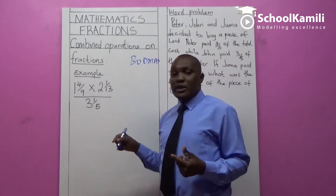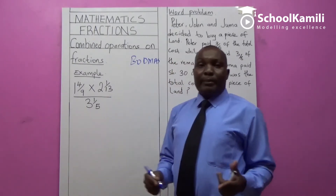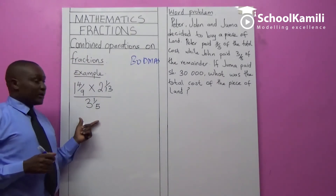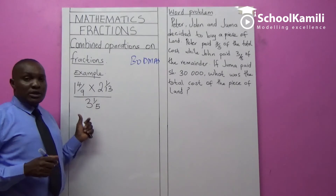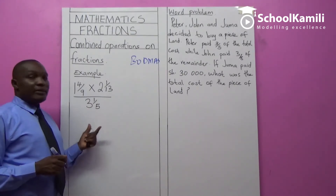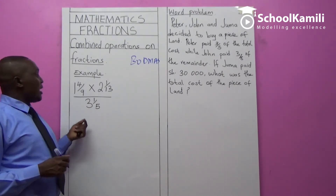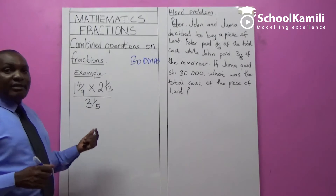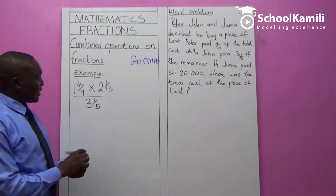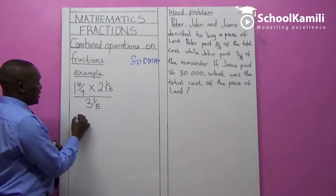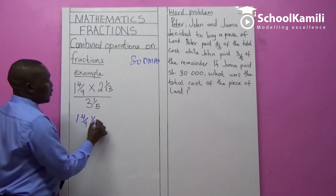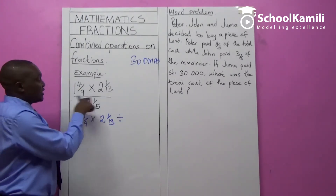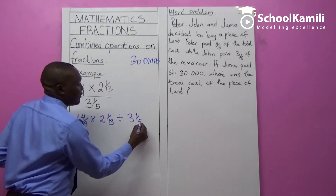Today I want us to look at fractions whereby we have been given about two or three signs. When you look at our question here, we have two signs: the multiplication sign and the division sign. The first thing you need to do before you begin solving the question, make sure that you rewrite the question putting brackets. The question is: 1 and 4 over 9, multiply by 2 and 1 over 13, divide by...